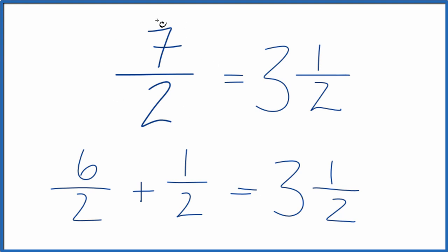So either way, if we take this improper fraction, 7 over 2, we can convert that to the whole number, to this mixed fraction, 3 and 1 half.